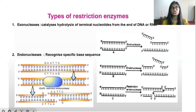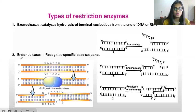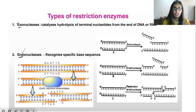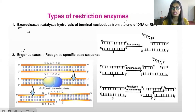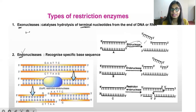Types of restriction enzymes: there are generally two types — exonuclease and endonuclease. What is the difference? 'Endo' means which will cleave in between, that is in the middle. 'Exo' means outside or at the ending — it catalyzes hydrolysis of terminal nucleotides from the end of DNA or RNA. So when exonuclease enzyme acts, it will cleave at the end, not in the middle. These types of enzymes we call exonucleases.